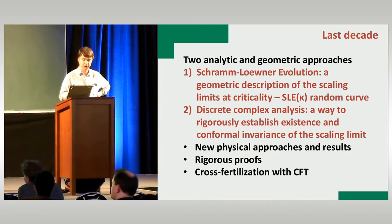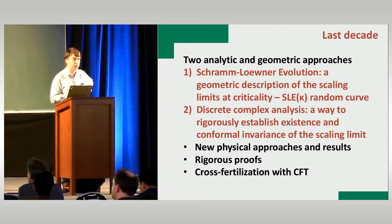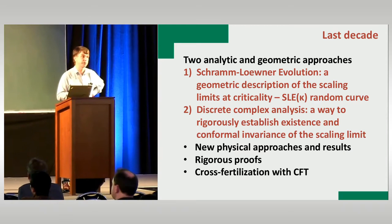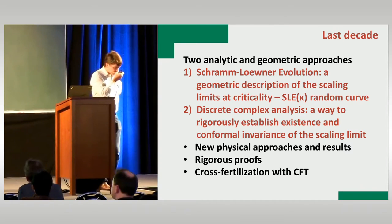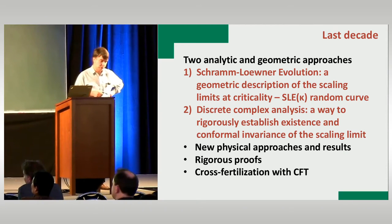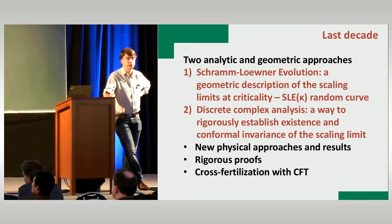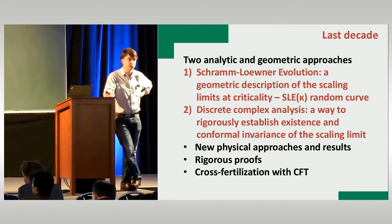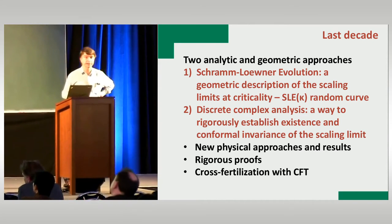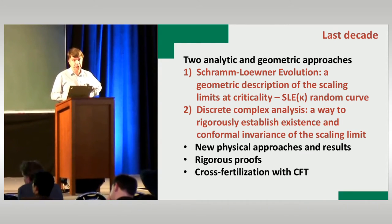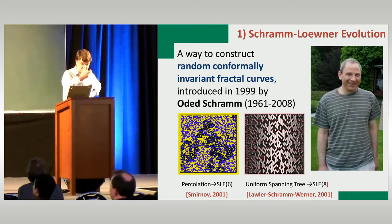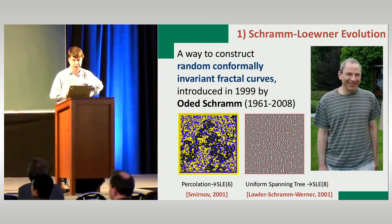Now I'll pass to the mathematics. There was big mathematical progress in understanding two-dimensional models — I'll speak about two methods. One is Schramm-Löwner evolution (SLE), which is a way to describe the one-parameter family of conformal field theories geometrically: instead of speaking of correlations of spins, you speak about scaling limits of domain walls — random curves — and geometry can sometimes be better used to do estimates. SLE was introduced by Schramm as a way to construct random conformally invariant fractal curves, and there is a one-parameter family of them.